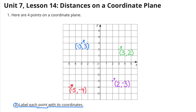Part A: Label each point with its coordinates. The coordinates for point K are negative 3 and positive 3 — that's 3 to the left on the x-axis and 3 up along the y-axis. The coordinates for point X are 3 and 2 — that's 3 to the right along the x-axis and 2 up along the y-axis.